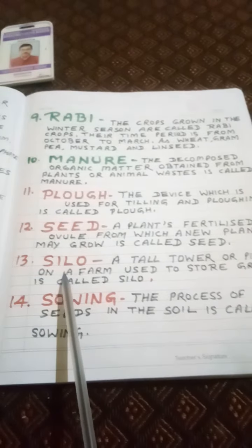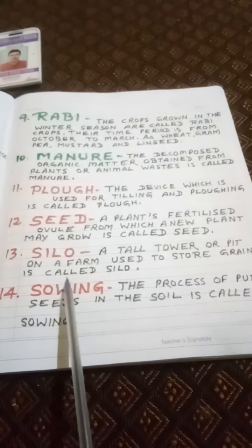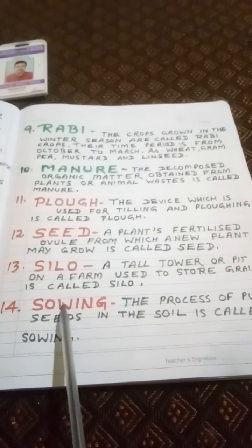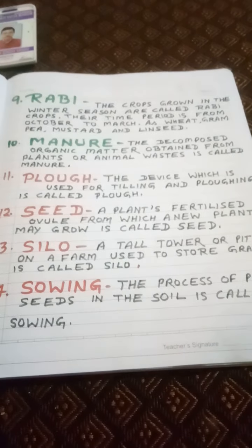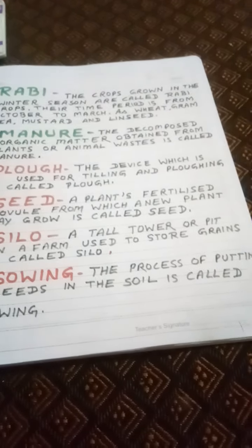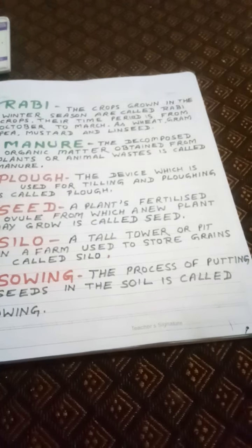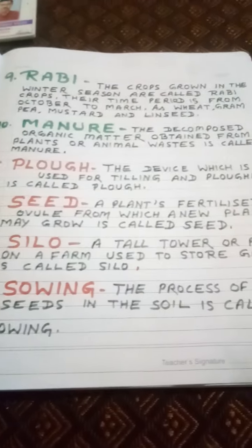Next keyword: Silo. A tall tower or pit on a farm used to store grains is called a silo. Large pits or tin structures are built in large size for this purpose. Look at these figures — these are silos used as granaries.